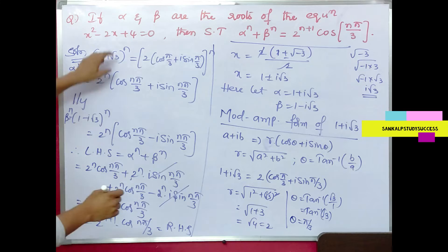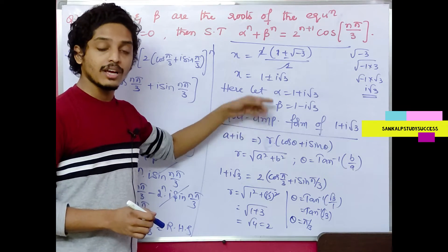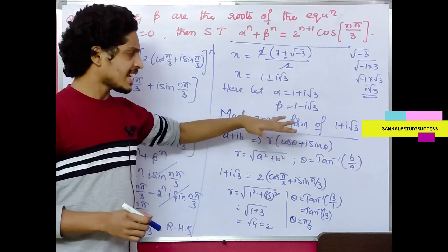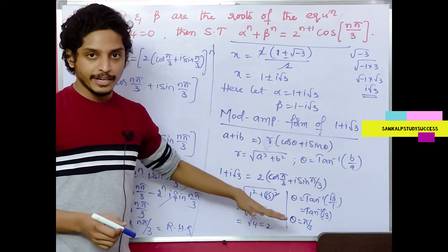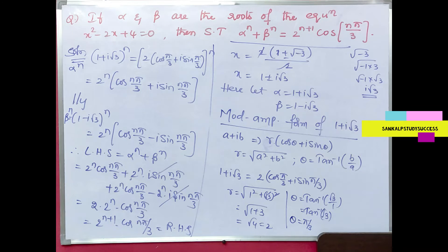So to summarize: we solve the quadratic equation to get roots alpha and beta, find the modulus-amplitude form, apply De Moivre's theorem, then cancel terms to arrive at RHS. This was an expected question for 2016–2019 exams. Please note this.